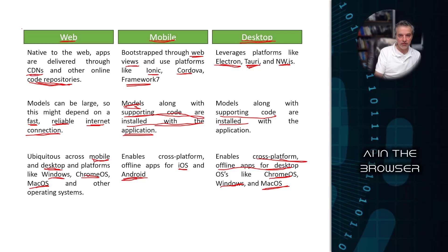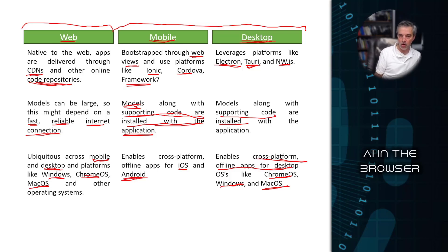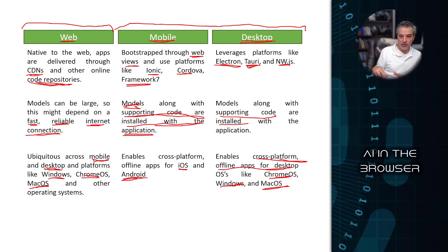In either case you end up with a desktop application with your code and models installed on the local device, so you can take it offline. This enables cross-platform offline applications for Chrome OS, Windows, and Mac OS. In summary, web pages are one approach, while mobile and desktop experiences are better when you want to pre-install the code. Either way the underlying technology is the same: browser-based, leveraging WebGL, WebGPU, HTML, CSS, and JavaScript.